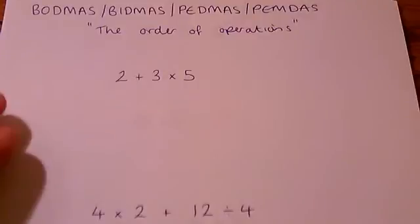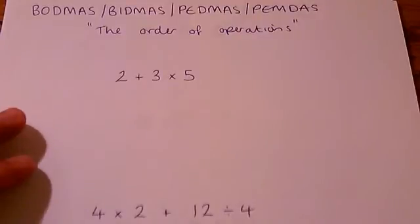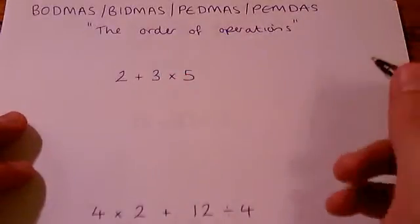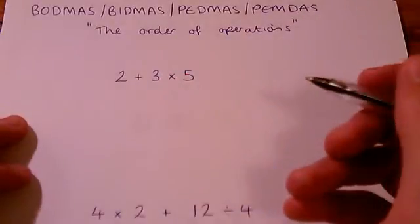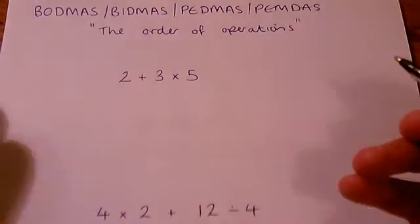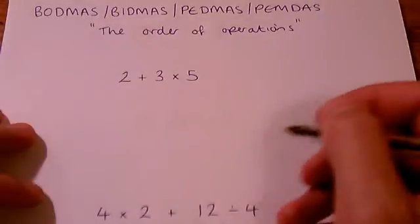That works on a scientific calculator. If you've got a bog standard, you know, cheaper calculator, not a scientific one, then it will do the 2 plus 3 first and then times by 5. But the scientific one knows how mathematicians work. This is the way mathematicians work. We always do division and multiplication before any adding or subtracting.